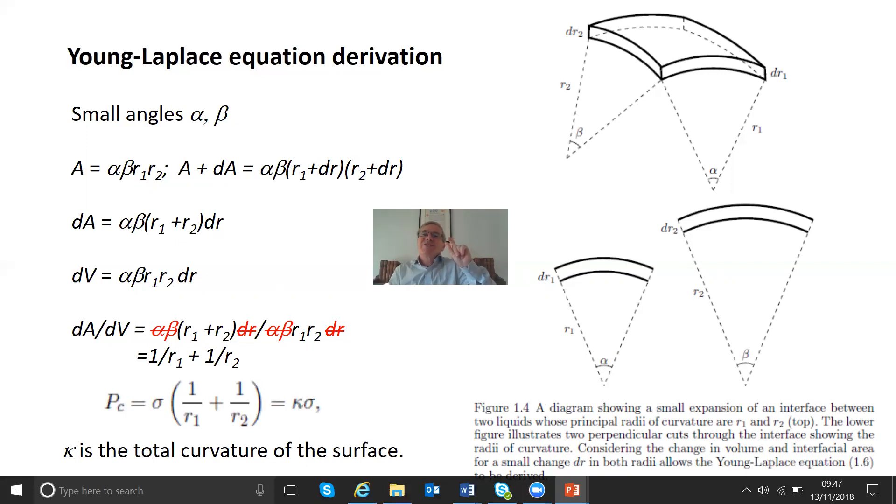The change in volume is simply the volume between those two interfaces moved slightly. It's just a little slither here. It has a length dR and then times the area. So it's αβR1R2 times dR. So dA/dV is just actually one divided by the other. So I can show it here. And the αβ and the dRs all cancel. And we're left with 1/R1 + 1/R2. A relatively simple calculation.